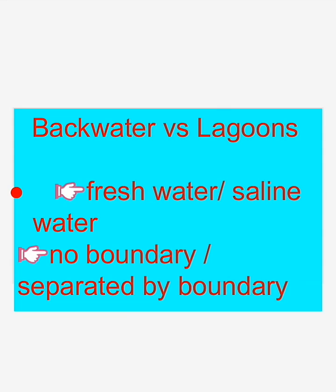If we talk about the difference between backwater and lagoons: in backwaters there is mostly fresh water, but in lagoons there is saline water. In the case of backwater, there is no boundary — there is a direct connection between the backwater body and its source. But in the case of lagoons, yes, there is a boundary which separates the lagoon from the larger body of water.